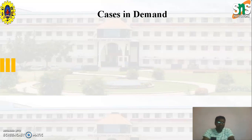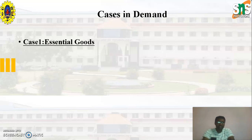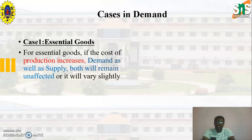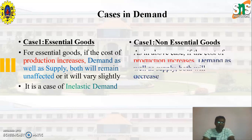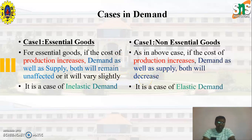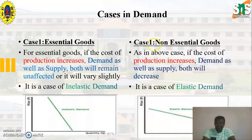Now we are going to discuss two types: essential goods and non-essential goods. In case of essential goods, if the cost of production increases, demand as well as supply will remain unaffected or vary slightly — this is also known as inelastic demand. Whereas in case of non-essential goods, where production cost increases, demand as well as supply will both decrease — this is also known as elastic demand.